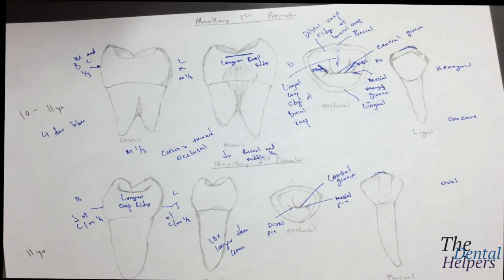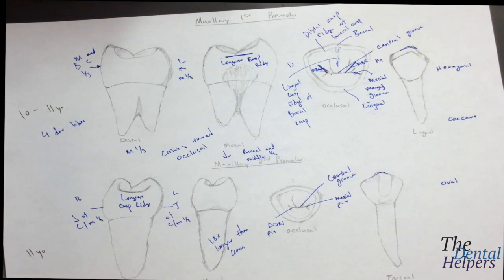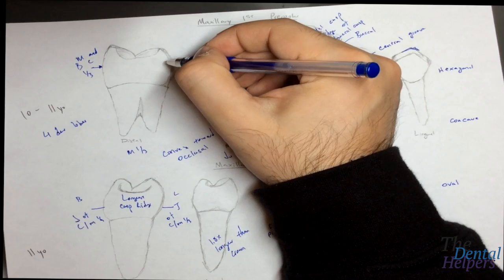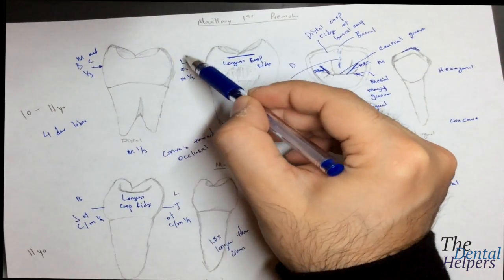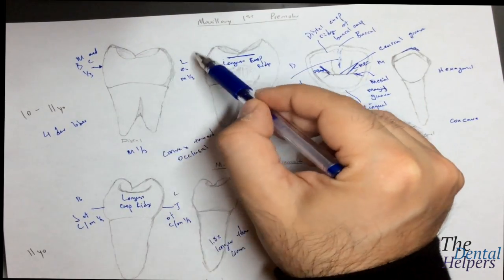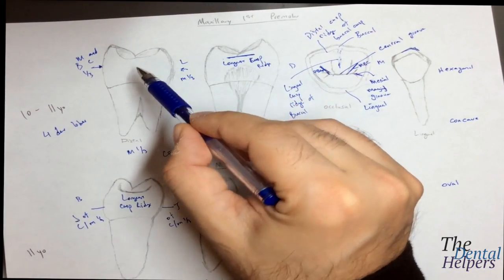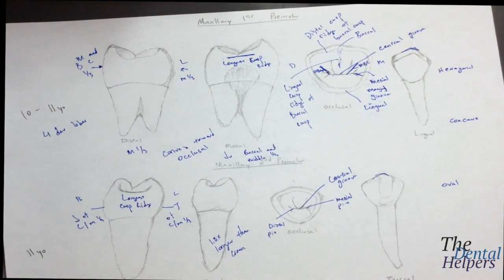The function of the maxillary second premolar is primarily for grinding. For occlusion, there's the concept of the stamp cusp versus the shear cusp. The stamp cusp is the functional cusp, while the shear cusp is the non-functional one. For the maxillary premolars, the lingual cusp lays inside the occlusal surface of the mandibular premolars, making it the functional stamp cusp. The buccal cusp floats outside and is the non-functional shear cusp — the opposite applies for mandibular premolars.